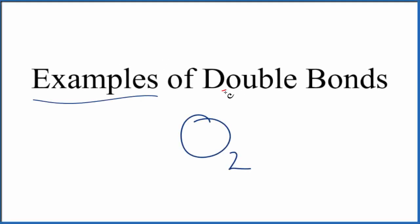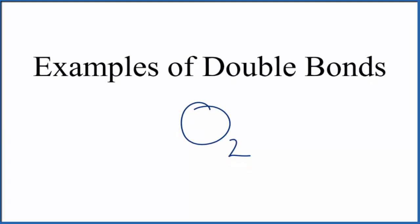Let's take a look at some examples of double covalent bonds. So we're going to start out with O2. This is oxygen gas, also called diatomic oxygen. If we want to draw the structure to see how the electrons are shared in the bonds there, we can look at the periodic table.